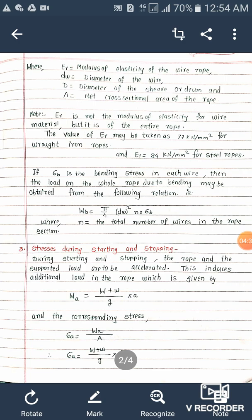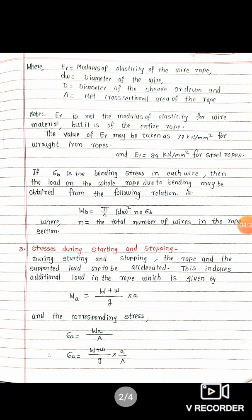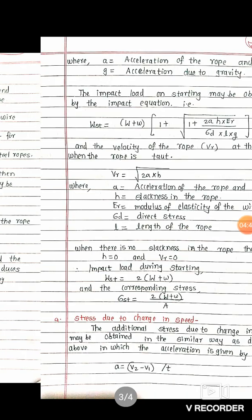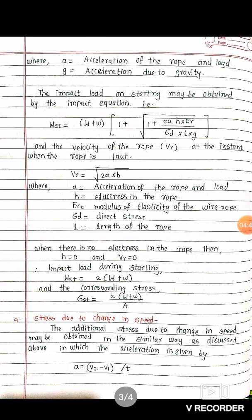Therefore, sigma A equals (W plus w) divided by G into a, divided by capital A, which is the cross-sectional area. Here, a is the acceleration of the rope and load, and G is the acceleration due to gravity.